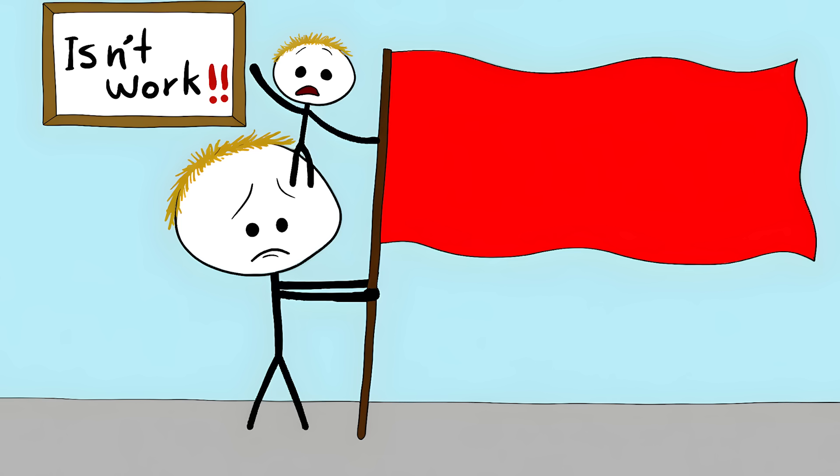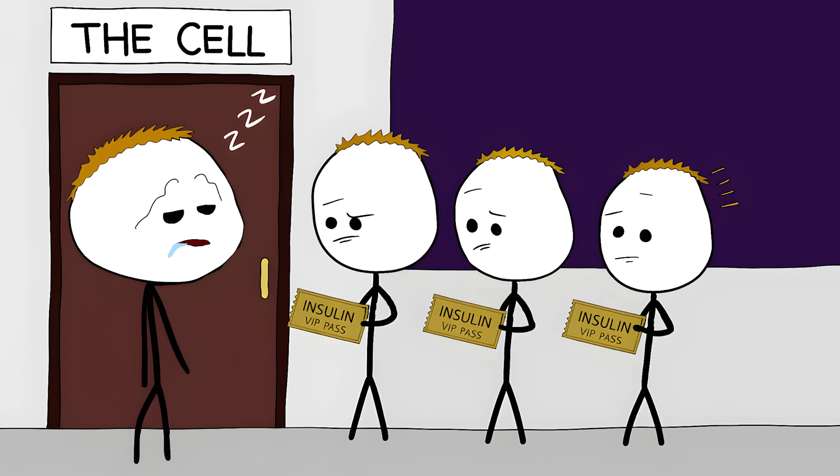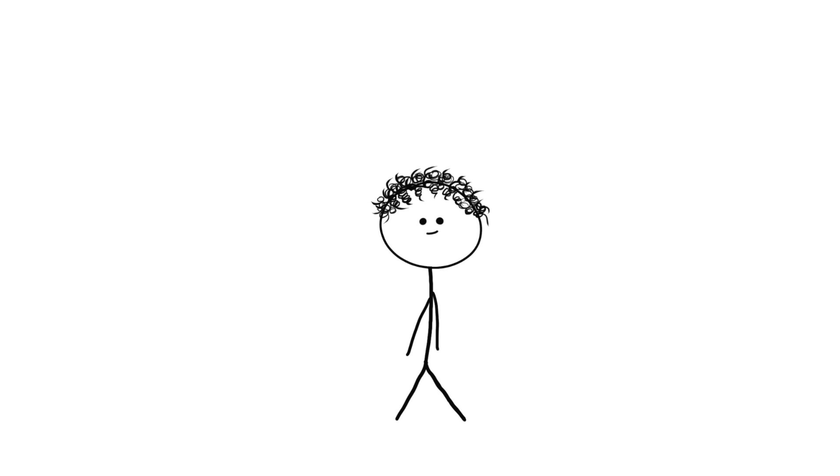They're actually your body waving a big red flag saying your insulin isn't working right. Imagine your cells are like nightclub bouncers, and insulin is the VIP pass that lets sugar in. But sometimes, these bouncers get tired of seeing so many VIP passes, they start ignoring them, making it harder for sugar to get into the club. That's insulin resistance, the pre-party to diabetes.